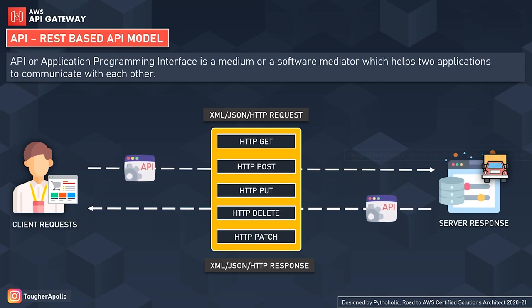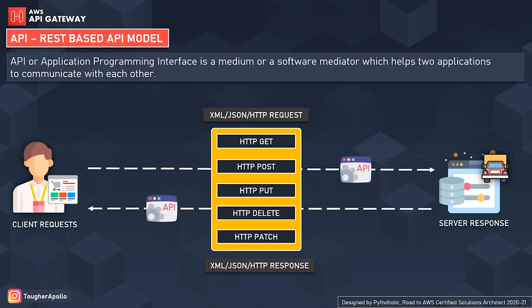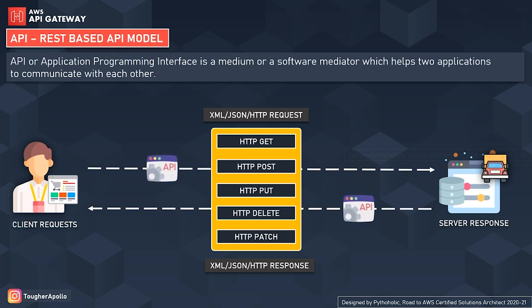With REST APIs, clients work with API calls made over HTTP using methods like GET, POST, PUT, DELETE, and PATCH, with request body templates using XML or JSON. The simple CRUD operations are: GET to read a resource, POST to create a new entry, PUT to update an existing resource, DELETE to remove it, and PATCH for a partial update without providing the full payload. To make REST calls, you can use SDKs, Postman, or REST clients.